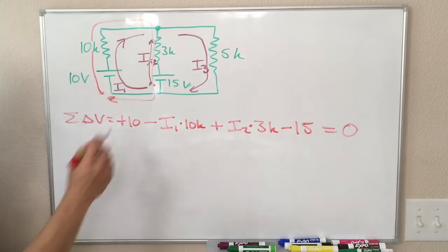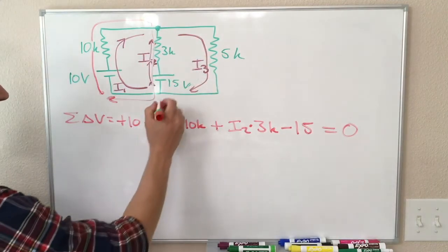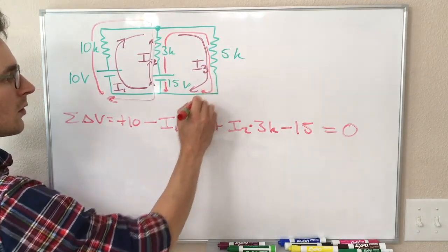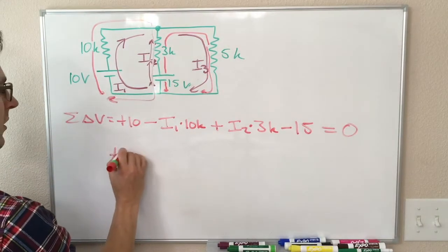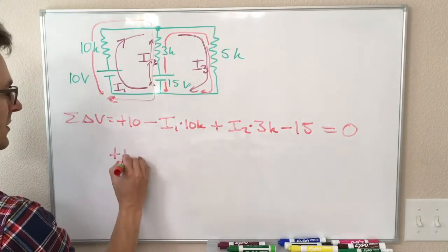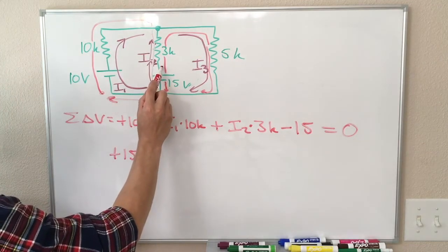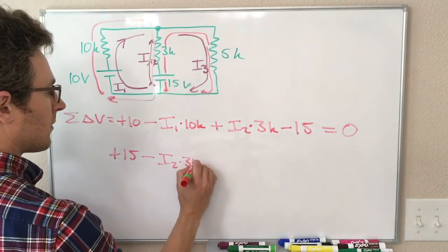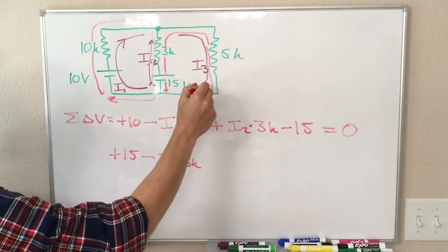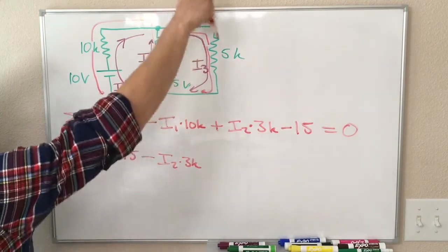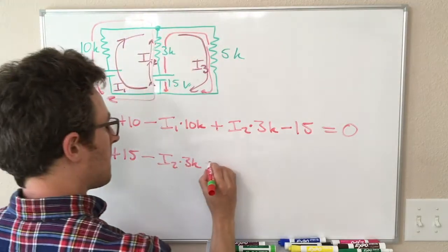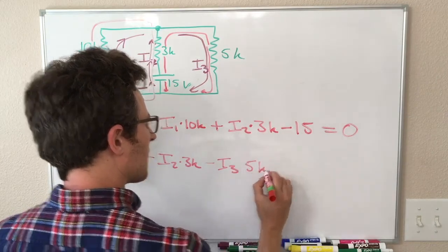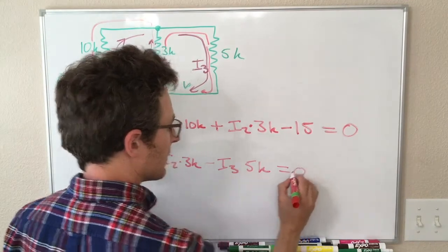Okay, so that's our first equation. Now let's do this loop over here. So starting here and going clockwise around there. So now we have 15 volts. We're increasing our potential by 15 volts. And then decreasing by I2 times 3k. And then decreasing again by I3 times 5k, right? The current's flowing this way, so we must be decreasing our potential. So it's 5k, and this also equals zero because we ended up back where we started.